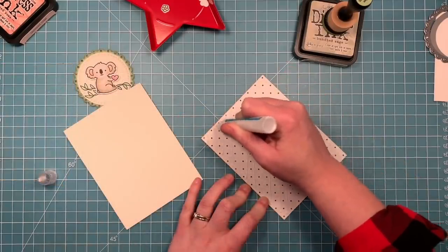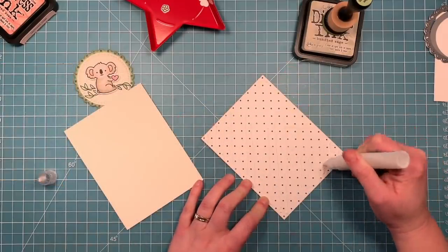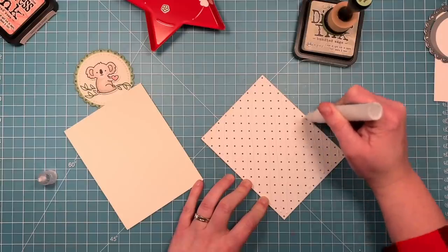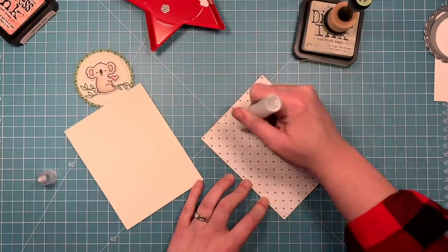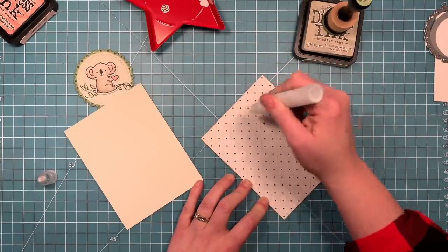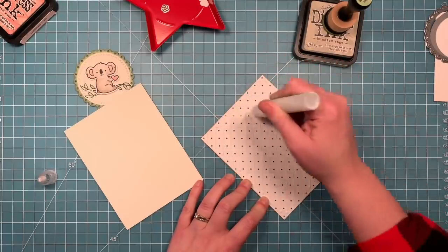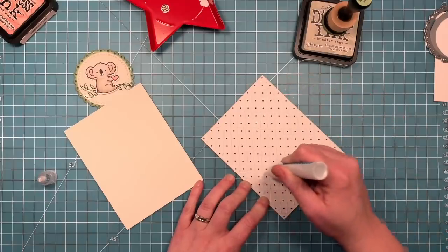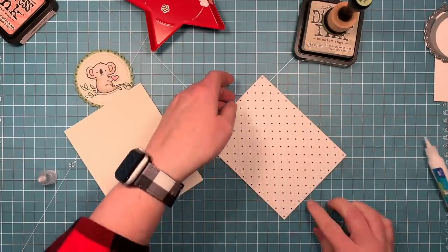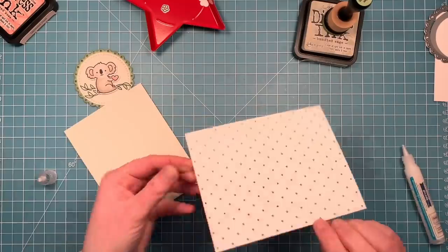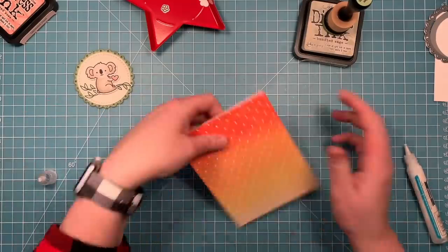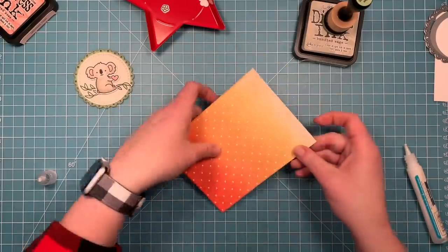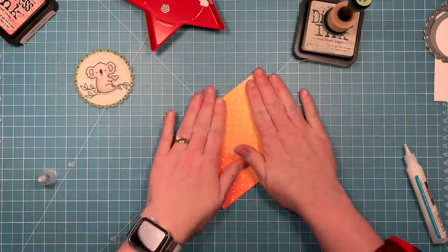Now to stick my background down to my card base. I'm just kind of making lines between all those little dots so that I make sure all the parts of my background are stuck down. These are just very thin lines of glue so I make sure that it doesn't squish and come out the little polka dot openings.